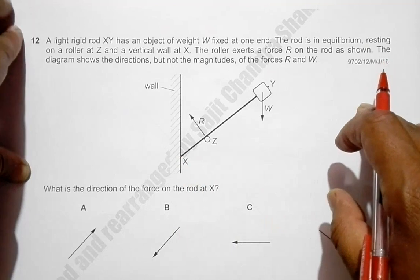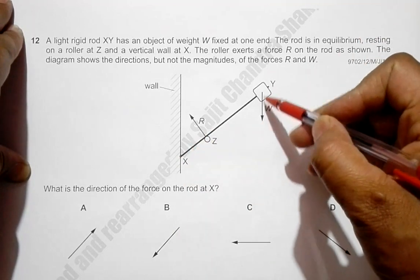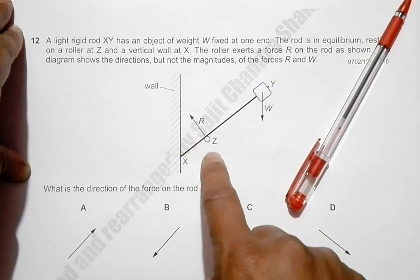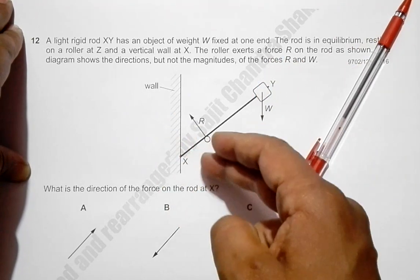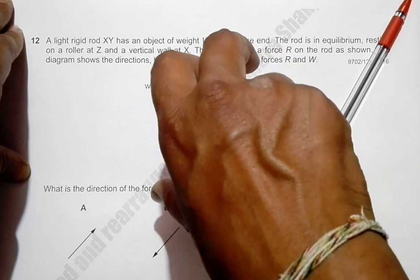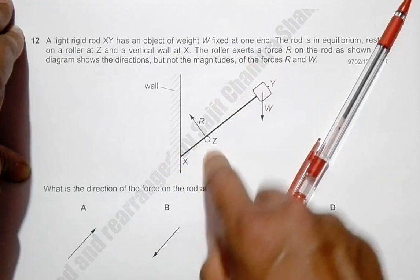So let us first realize that because of the action of these two forces, W will be trying to move the rod like this, and similarly this force will be trying to move the rod like this. So the ultimate result is that this rod will be moving clockwise. So these two forces will be trying to move the rod clockwise.